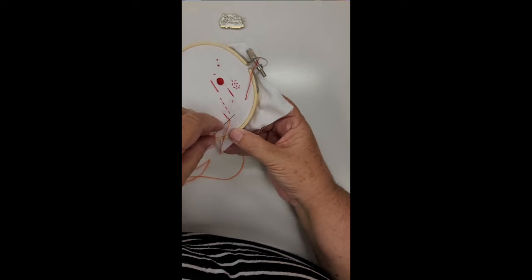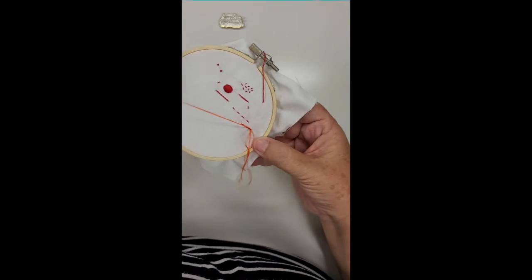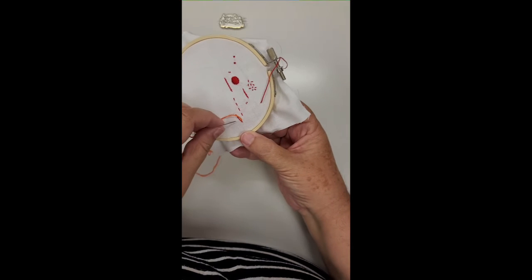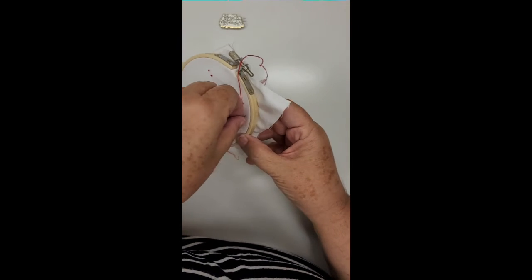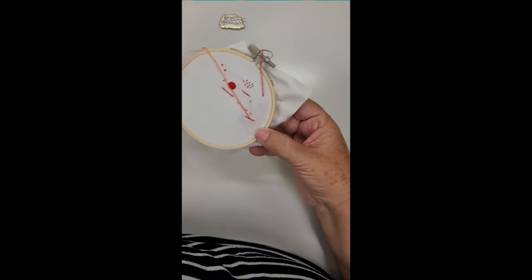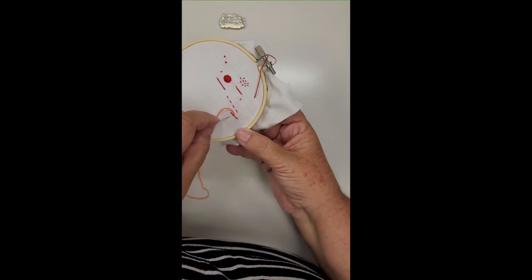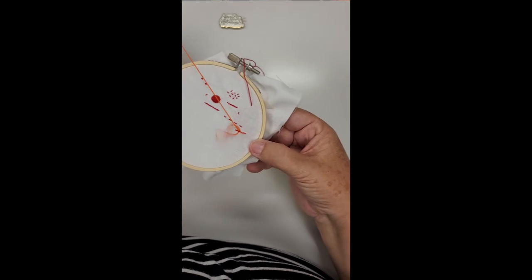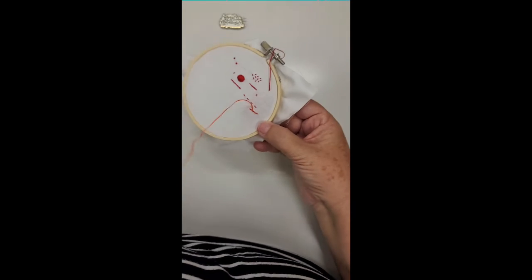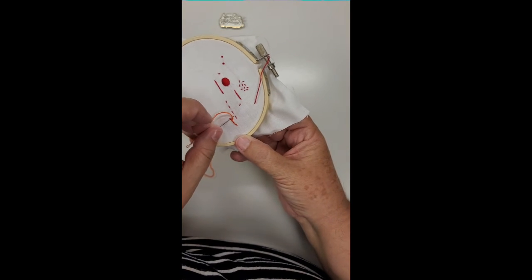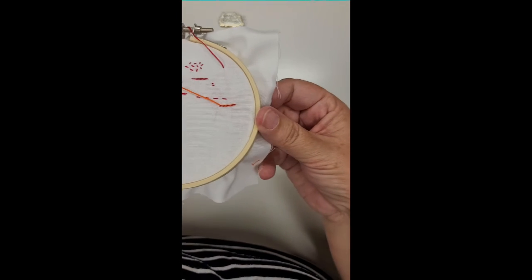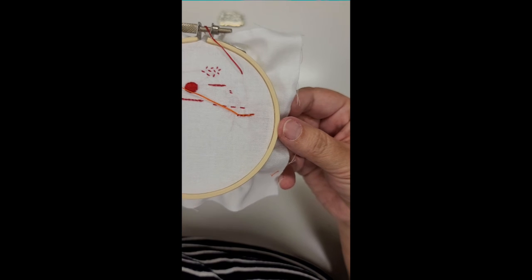You're going to slide that needle underneath the backstitch, and you're going to weave it in and out. So it's stripey looking. It's really a pretty look. A very pretty look. See that? That's whipped backstitch.